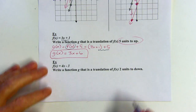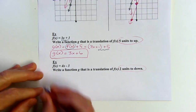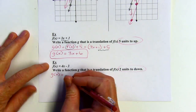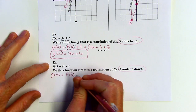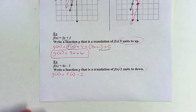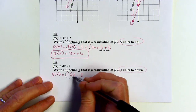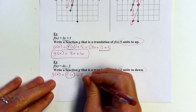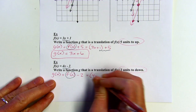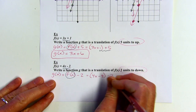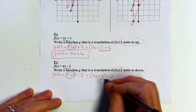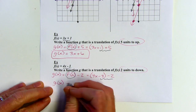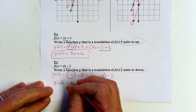Now we're moving 2 units down. My new function g is going to be f of x minus 2. I'll substitute in for f of x — this time f of x is 4x minus 3 — giving the quantity 4x minus 3, minus 2. Combining negative 3 and negative 2 gives 4x minus 5.